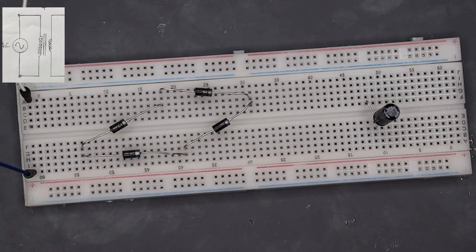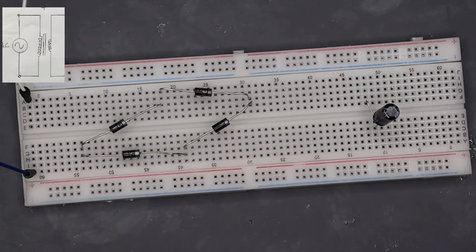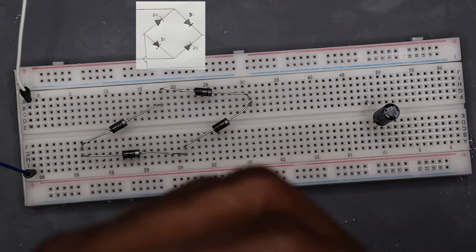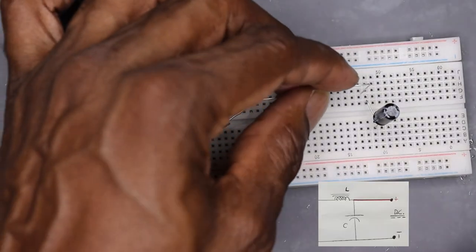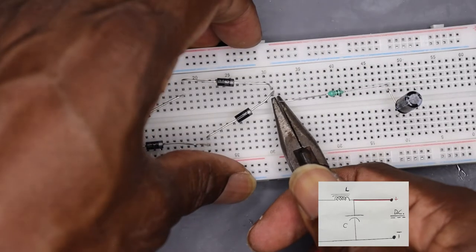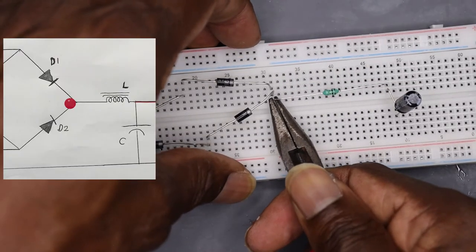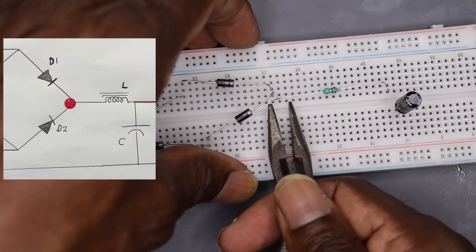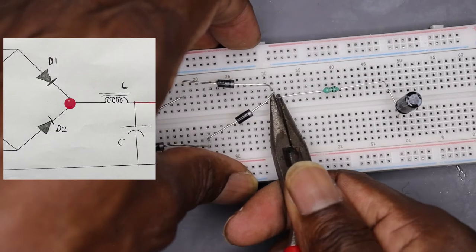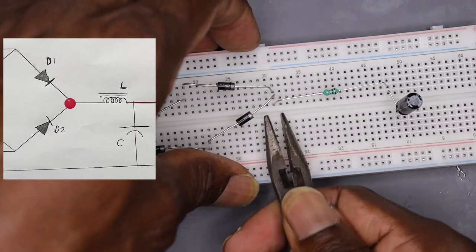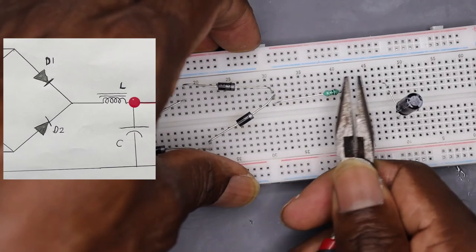To the left would be the transformation stage, only that the transformer isn't there. The middle with the diodes would be the rectification stage, and then we're working on the filtering stage where I'm going to add the inductor coil. From the cathode-cathode end of those two diodes you need to connect the inductor coil, and the other end of the inductor coil to the positive end of the capacitor.